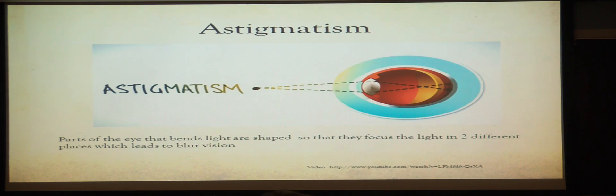With astigmatism, when you see an image, instead of reflecting into one focal point, it would reflect in two different areas. So it would usually lead to blurred vision, which is very problematic for someone who experiences nearsightedness.